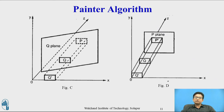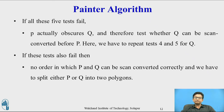You can also see the Z-extents of P and Q where polygon Q lies entirely on the same side of P's plane as the viewport. You can consider any of these cases when identifying the surface. If all five tests — tests 1 through 5 — fail, we assume that polygon P actually obscures Q.